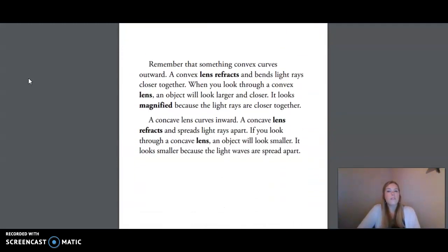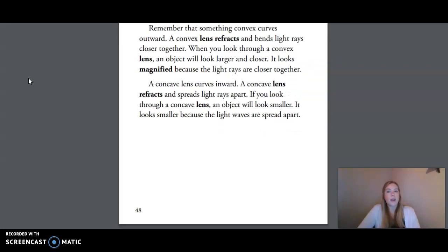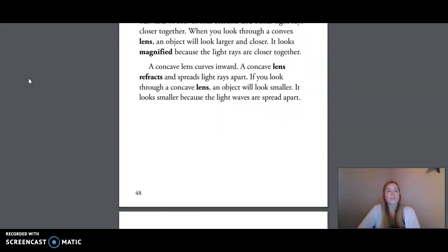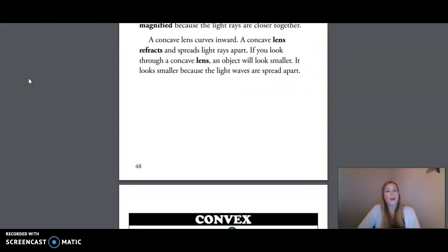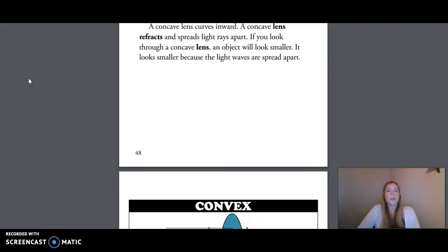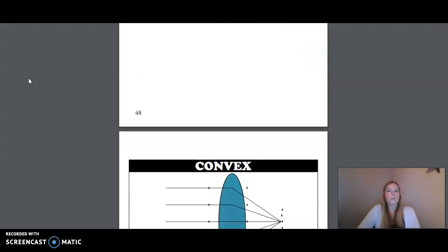Remember that something convex curves outward. A convex lens refracts and bends light rays closer together. When you look through a convex lens, an object will look larger and closer. It looks magnified because the light rays are closer together. A concave lens curves inward. A concave lens refracts and spreads light rays apart. If you look through a concave lens, an object will look smaller, because the light waves are spread apart.